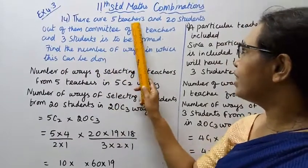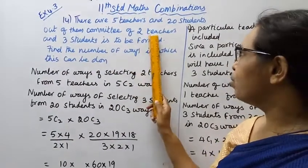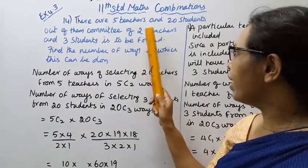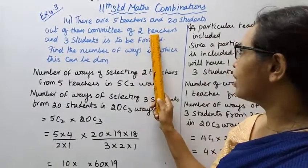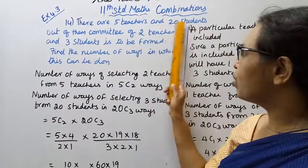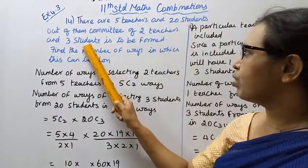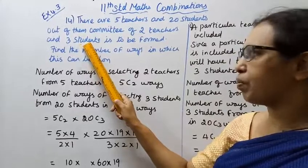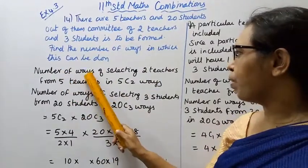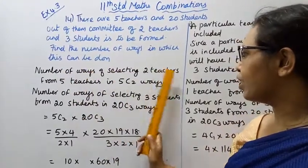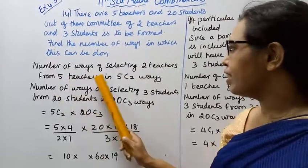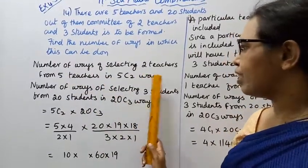We have 5 teachers, and we need to select 2 teachers for the committee. The number of ways of selecting 2 teachers from 5 teachers is 5C2 ways.